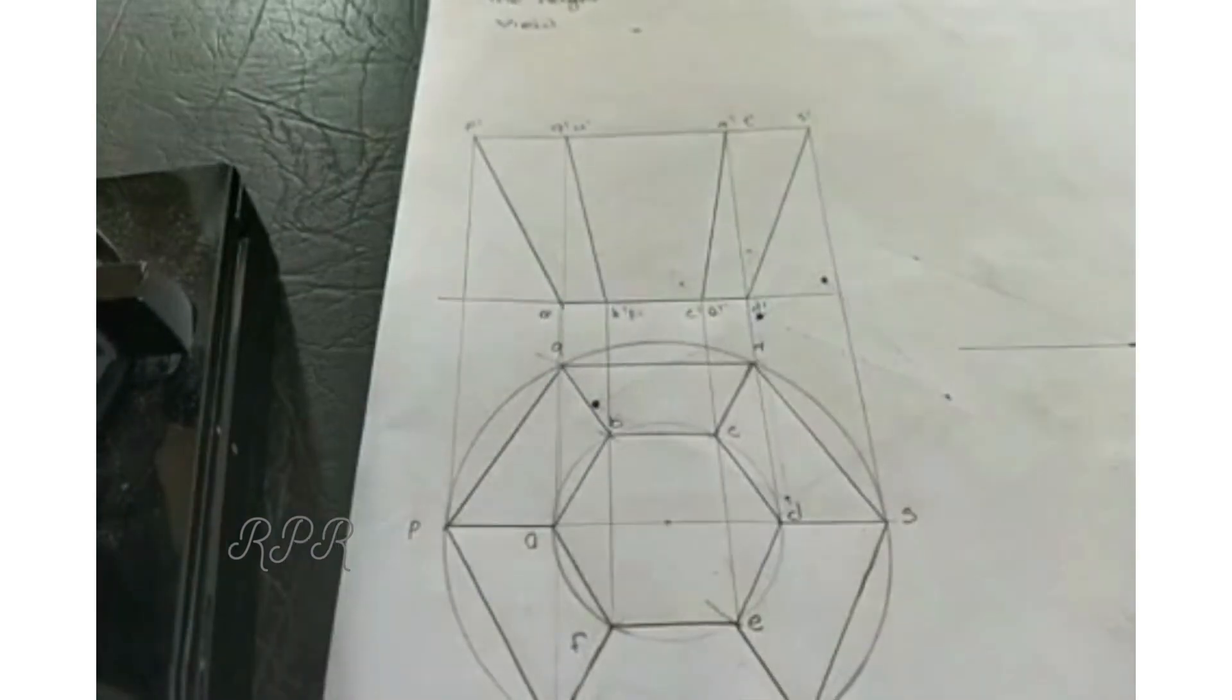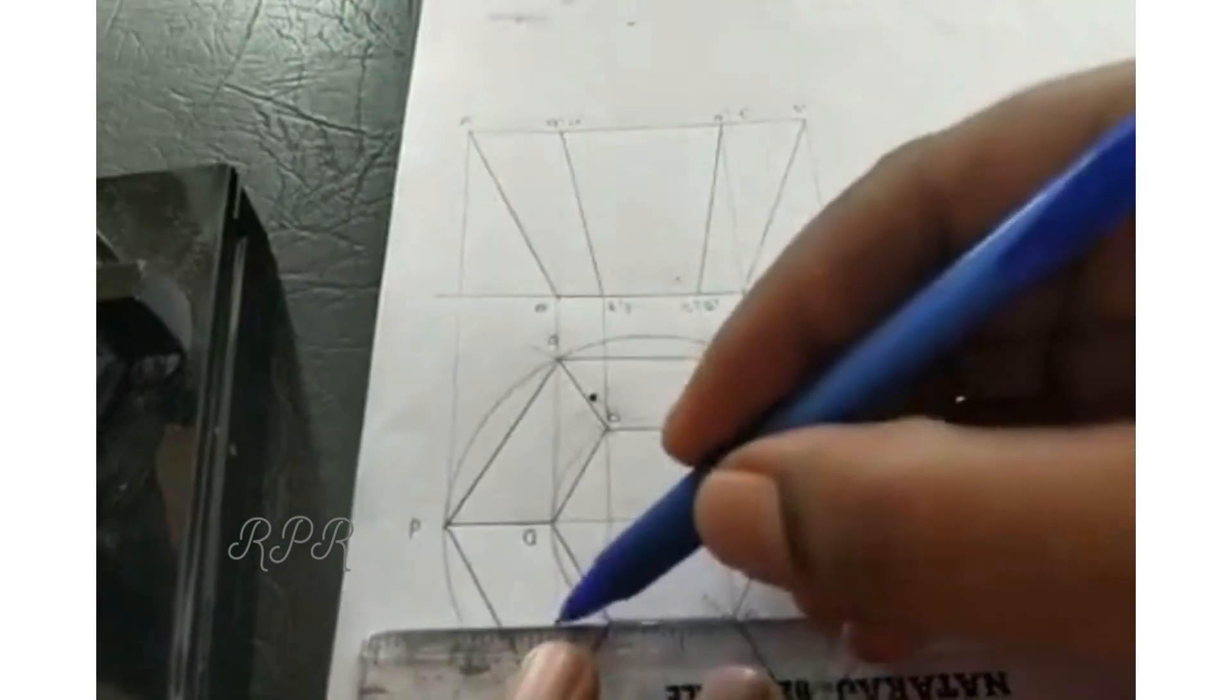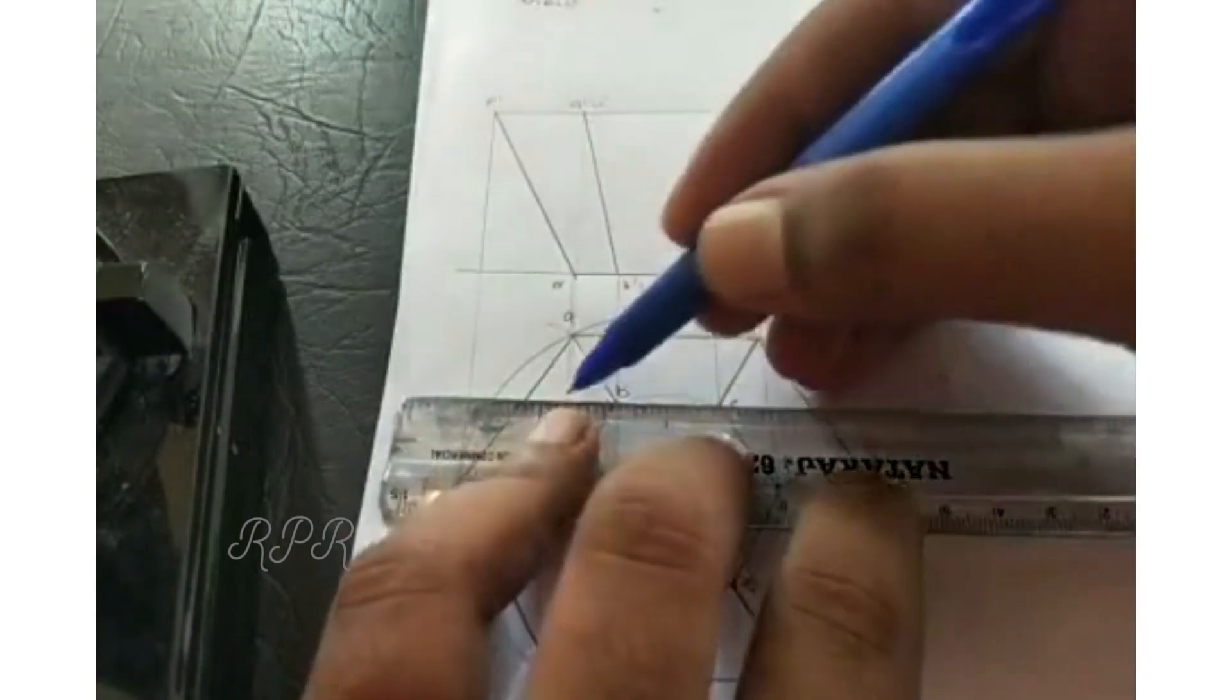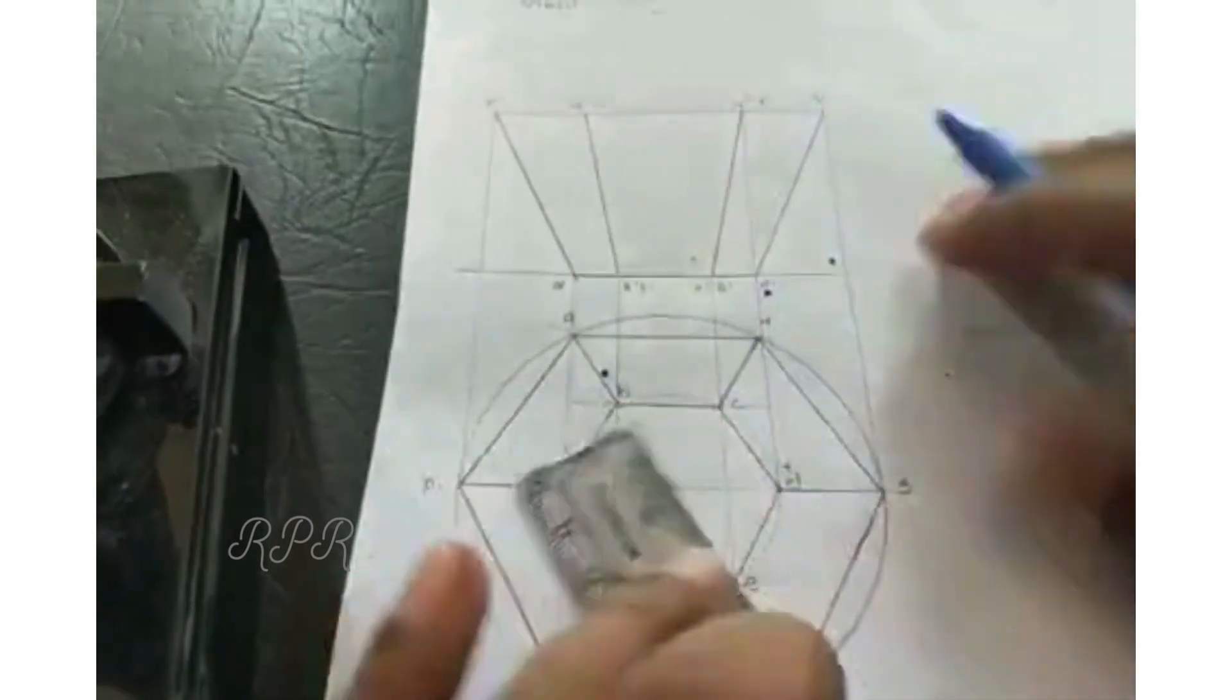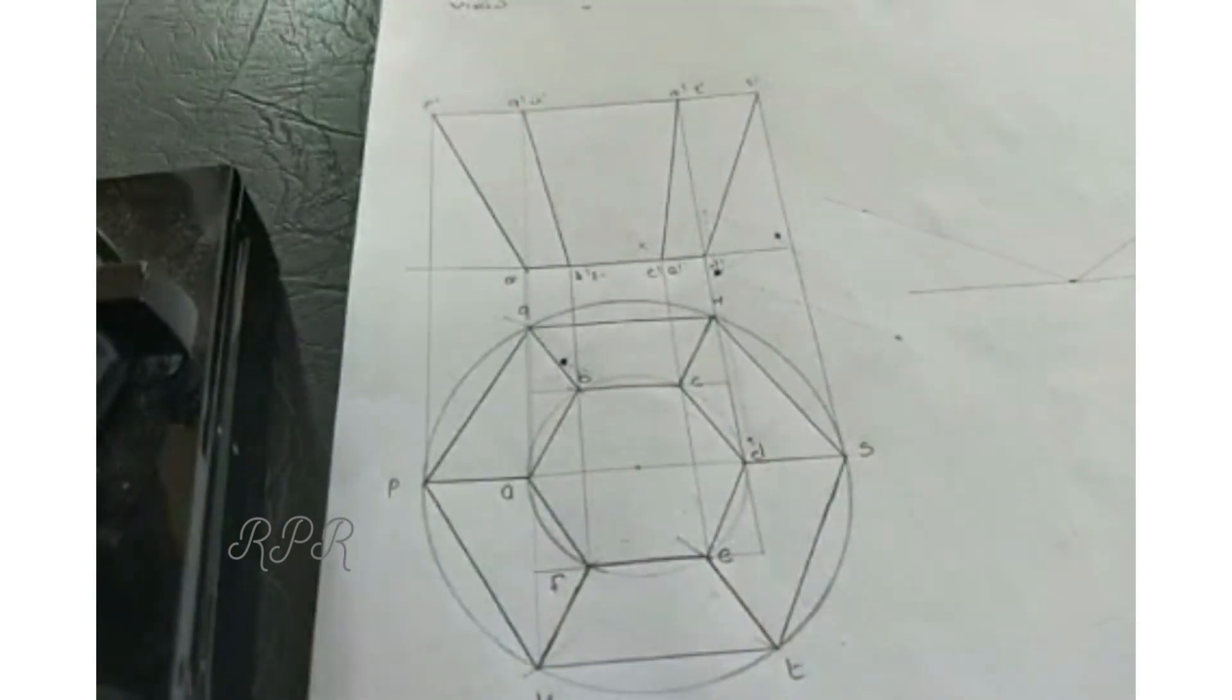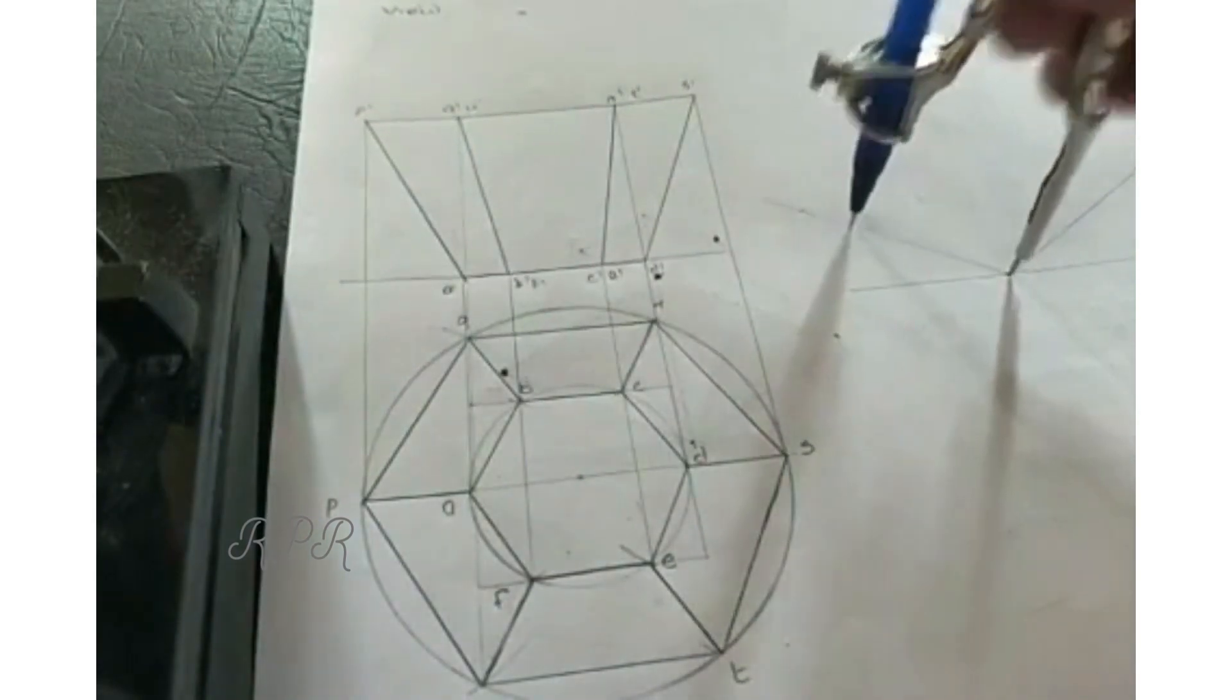So we will project PQRST to 50mm height. So convert it into a box. And this line is drawn here.